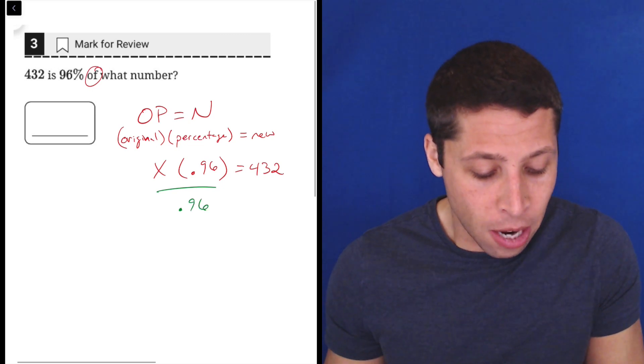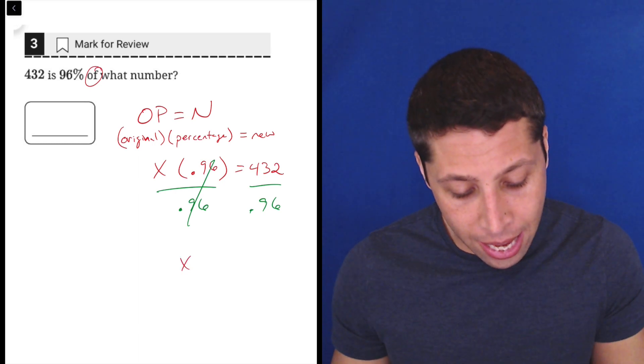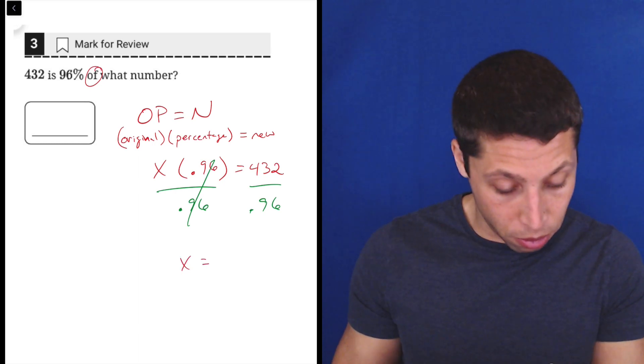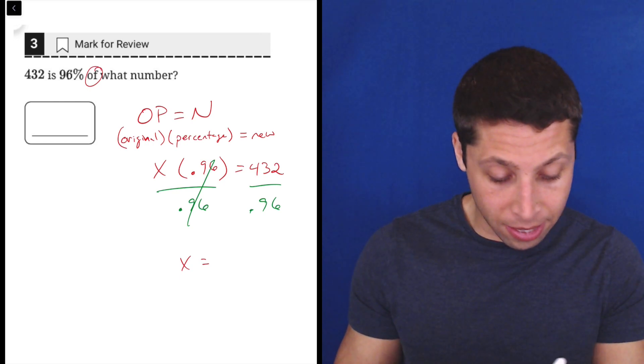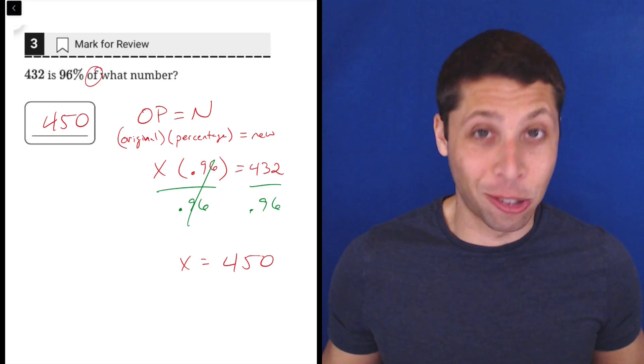In order to solve for X, we need to divide both sides by 0.96. It's going to cross it out here and it's going to let us get the actual answer, which is 432 divided by 0.96. And I get 450 and that is the actual answer.